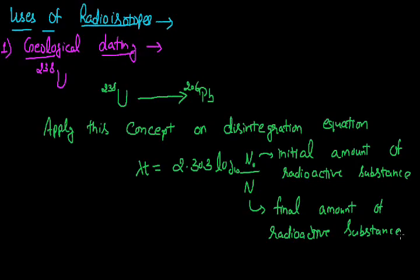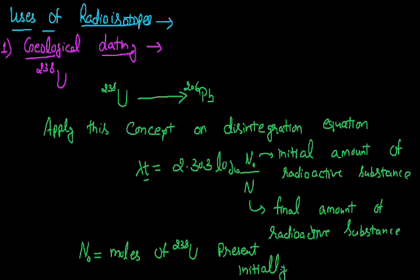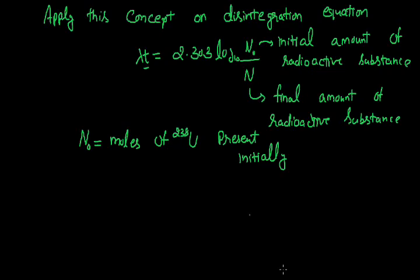By putting the values of N₀ and N, we can find out the time period or the age of the rock. The initial amount of radioactive substance N₀ equals the moles of uranium-238 present initially. However, we do not know what the moles of radioactive uranium were at the start — for example, 5000 years back — so we take the help of a concept here.